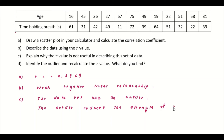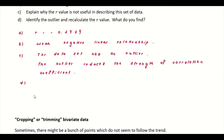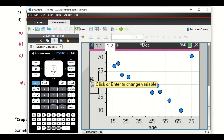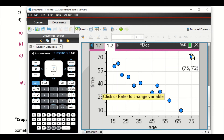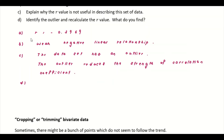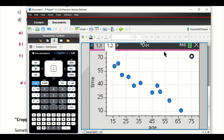Now we need to identify the outlier, then remove it and see if there's any difference in R. Part D: identify the outlier and recalculate R. Go back to your calculator — use the cursor, move around to this point, and you can read the coordinates. This data point is (75, 72). So the outlier is the data point (75, 72). What we need to do is identify it, remove it, then recalculate the R value.